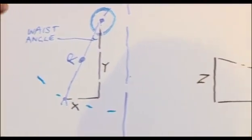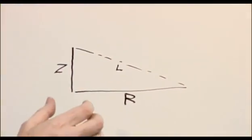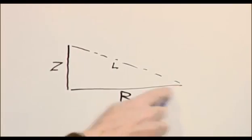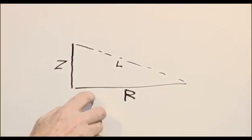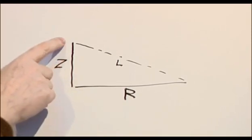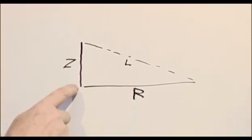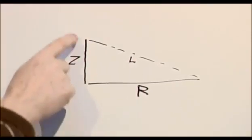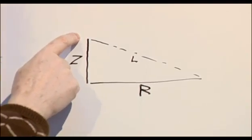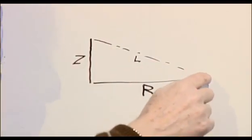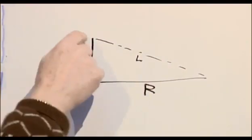Looking at it from the side, in elevation, we have the radius that we calculated here, and we have our Z height, which could have been negative, but we'll think positive. And that gives us a length, which is from the centre of the robot to the gripper.